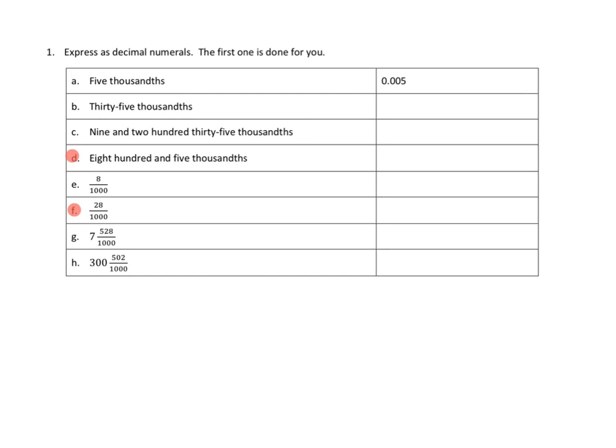Okay, let's take a look at problem number one. We are asked to express as decimal numerals. The first one is done for you. I see, so they say, well, what is five thousandths? They do it over here. So right, they have five in the thousandths column, right, and nothing in the hundredths and nothing in the tenths column.